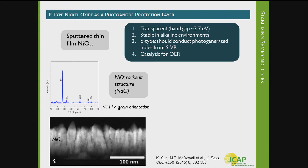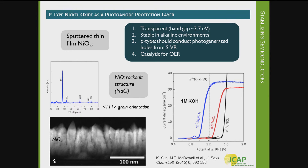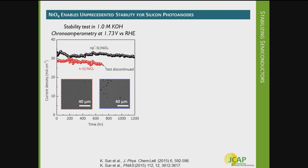This is a scanning TEM image of the nickel oxide films — they're columnar. Cyclic voltammograms under illumination show rectifying properties in contact with silicon. Very excitingly, these films show significant stability in pH 14 conditions. This is a test of silicon protected with nickel oxide over 1,200 hours with very little photocurrent decay. And I think these have been extended to over 2,000 hours now with very little decay in photocurrent. So these nickel oxide films in alkaline conditions seem to be working very well protecting these semiconductors.